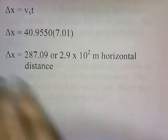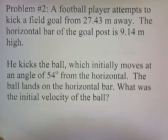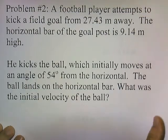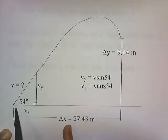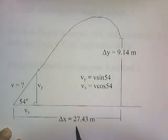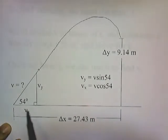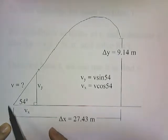Let's try another problem. A football player attempts to kick a field goal from 27.43 meters away. The horizontal bar of the goal post is 9.14 meters high. He kicks the ball, which initially moves at an angle of 54 degrees from the horizontal, and the ball lands on the horizontal bar. What was the initial velocity of the ball? The ball is kicked at some unknown diagonal velocity at 54 degrees, and after traveling a horizontal distance of 27.43 meters, it's at a height of 9.14 meters.